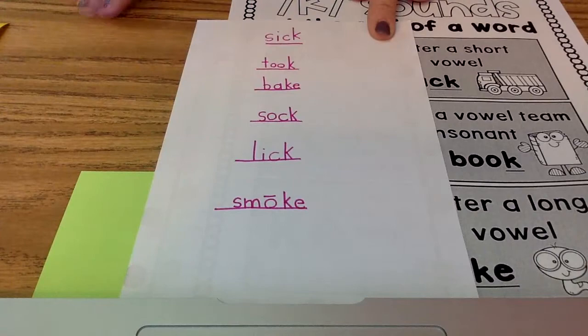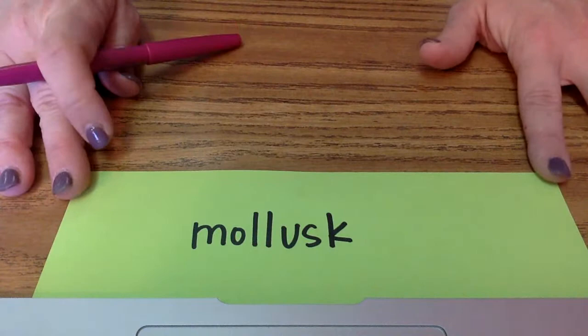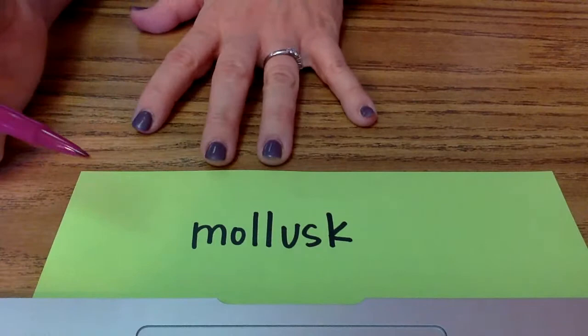All right, the next thing that I want to do is some syllabication, syllable division. So, go get yourself a piece of paper and write this word: M-O-L-L-U-S-K. If you need to pause the video to get your paper and your words set up, that's fine, but I'm going to move on.